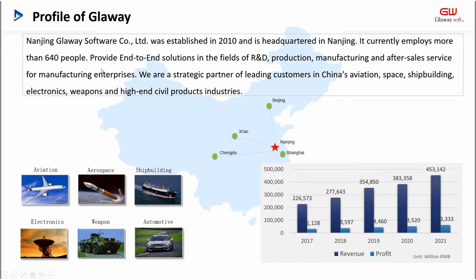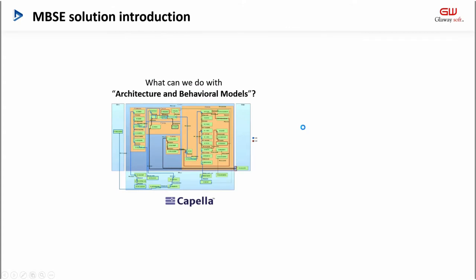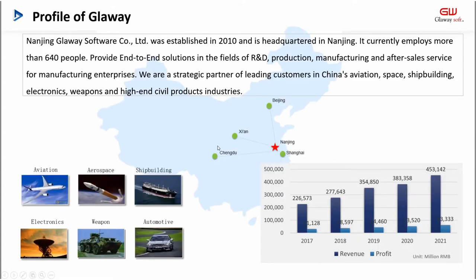Glaway was established in 2010 and started to develop MBSE business in 2015. As you can see on the map, the company is headquartered in Nanjing and has branches in Beijing, Shanghai, and Xi'an. Up to now, the company has more than 640 employees, of which more than 85% are technical team members.